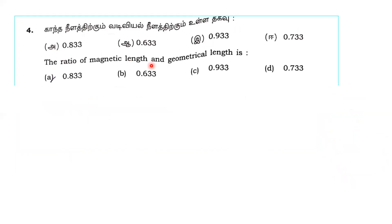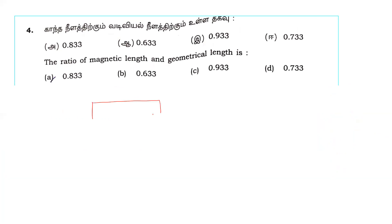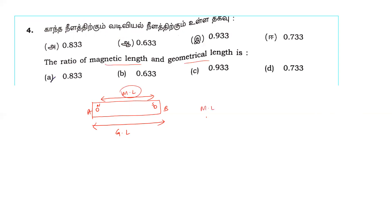Next question: the ratio of magnetic length to geometric length. The magnetic length is the distance between the north pole and south pole of a magnet. The geometric length is the total physical length. The ratio of magnetic length to geometric length is 5/6, which is approximately 0.833.